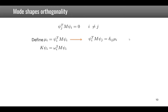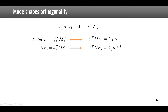To prove the second orthogonality condition, we take the initial equation, pre-multiply by psi_i-transpose, and take into account the first condition. This leads to the second orthogonality condition: mode shapes are also orthogonal with respect to the stiffness matrix K, and the product gives delta_ij times mu_i times omega_i-squared.